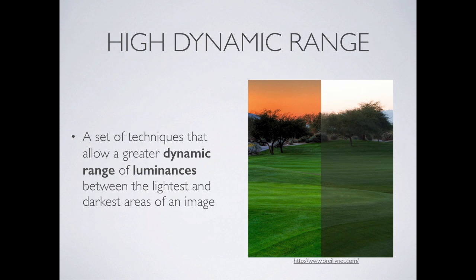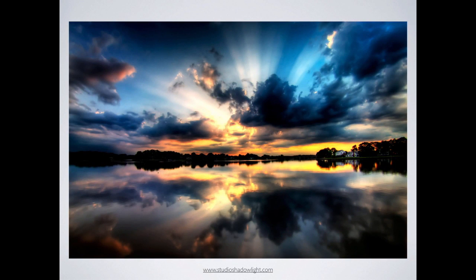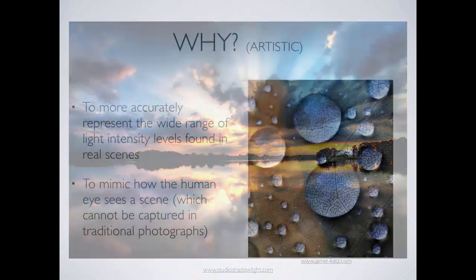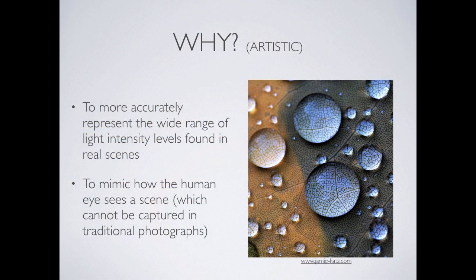This one is kind of what we would get out of a standard photograph, and this is the high dynamic range version of the same photograph. You can see that we get the sunset, the shadows, and the grass, whereas normally we get one or the other. Basically what we're trying to do is accurately represent the various light intensity levels that we see naturally in our eyes.